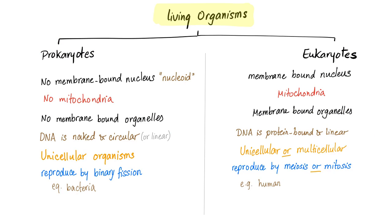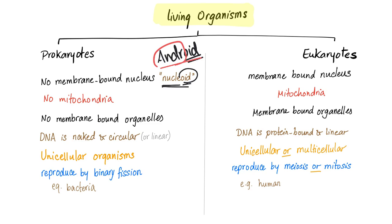We divide living organisms into prokaryotes or eukaryotes. Prokaryotes have no membrane-bound nucleus. They have a nucleoid, which literally means nucleus-like. Oid means like — such as Android that you have on your phones. Android means human-like; it's a robot, so it's human-like.